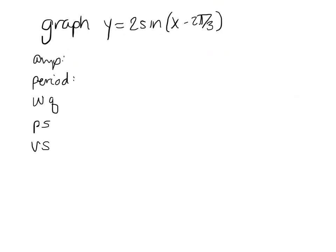We have a graphing problem — we're going to graph sine. I start with the amplitude, which is going to be 2 because that's the number in front of sine. The period: I take 2π divided by B, and B is the number in front of the parentheses. There's nothing there, so it's just 2π, which means the width of the quarters is 2π over 4, or π over 2. My phase shift is 2π over 3, and since it's a minus, I'm moving it to the right. There is no vertical shift.